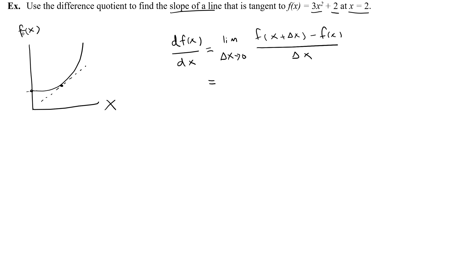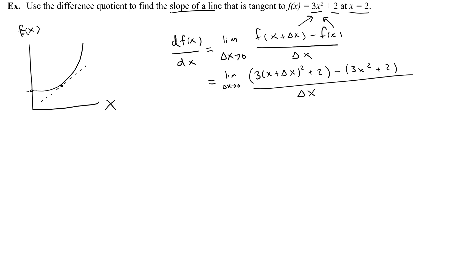Now let's fill out the slope of the secant. We take x plus delta x and plug it into the function, giving us 3 times the quantity x plus delta x, squared, plus 2. Then subtract f of x, which is 3x squared plus 2. Divide the whole thing by delta x. Eventually I'll reach a place where I can say delta x is zero — but I can't do that yet because it's on the bottom, so I have to simplify.